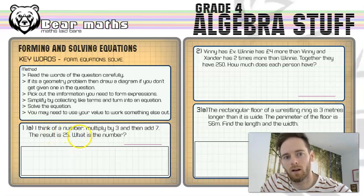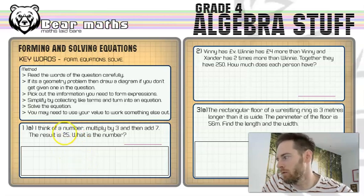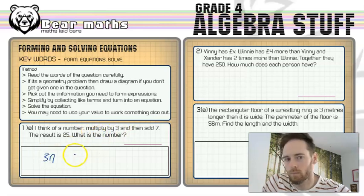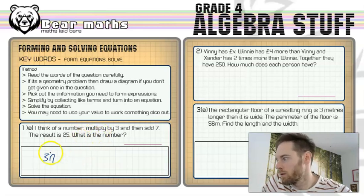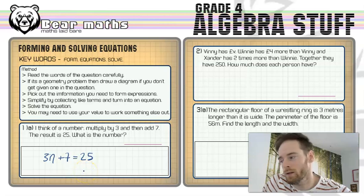I'm thinking of a number. It is unknown to you. So what you would do is write down x or y or z or n or whatever you want to write down. Write n for number. So I'm thinking of that number. It's got to be multiplied by 3 and the way we do that is we put 3 in front of the n. So 3n and then add 7, so plus 7. We have formed an expression. The result is 25, so it equals 25. We have now formed an equation.